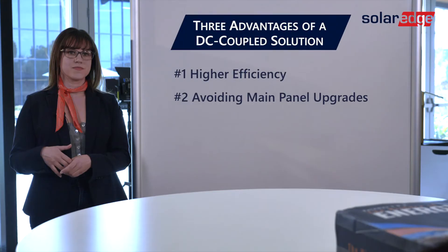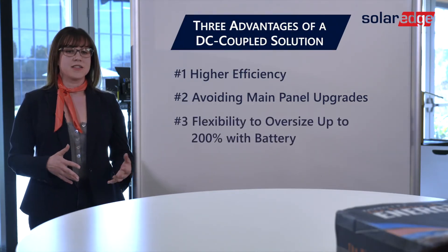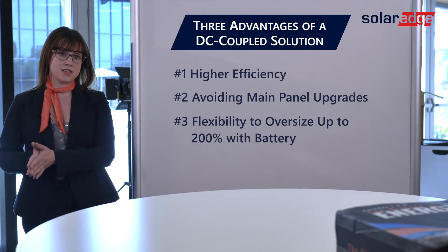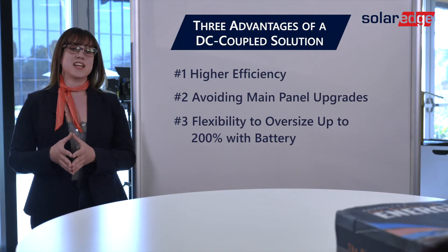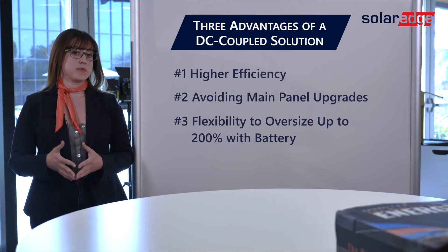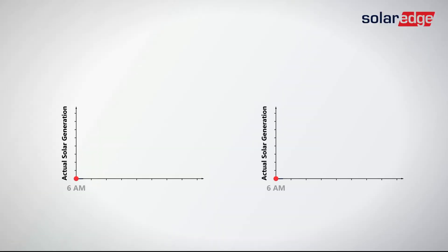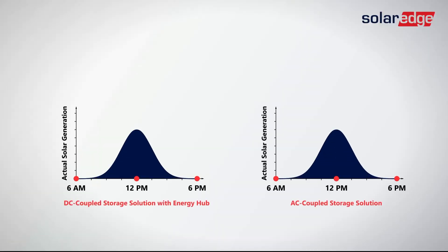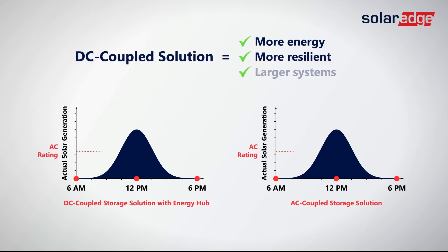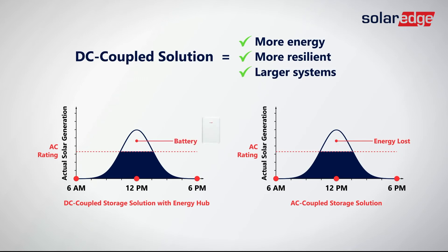Sounds like your SolarEdge DC coupled solution has a really efficient design overall. I agree. So let's talk about number three: the ability to oversize to 200% on one inverter, or the flexibility to put more solar on one inverter. For example, you can put a 15 kW solar system on a 7.6 kW inverter with SolarEdge. Why can we oversize an inverter up to 200% with the SolarEdge battery solution? Because our battery sits on the DC side of the system, we can take that DC energy from the modules that may normally be clipped due to excessive oversizing and send it back to the battery for when the homeowner needs it.